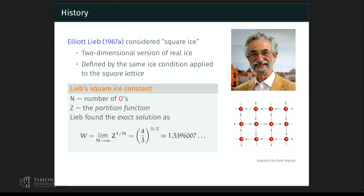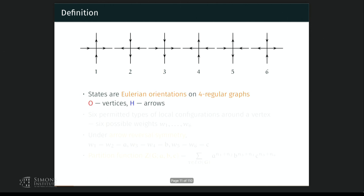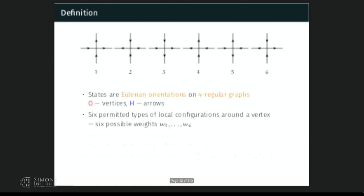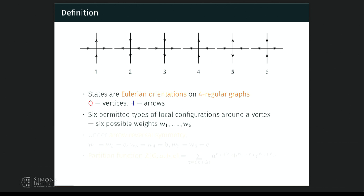If we model oxygens as vertices and hydrogens as arrows — close to one oxygen means an arrow going in, far from one vertex means an arrow going out — then the states are just the Eulerian orientations on four-regular graphs. There are six permitted types of local configuration around the vertex because four-choose-two edges are going in, so there are six possible weights W1 to W6. Under arrow reversal symmetry, we study this model when W1 = W2 = A, two states have weight B, and two states have weight C. The partition function is the weighted sum of all valid Eulerian orientations, where each orientation's weight is the product over vertices.